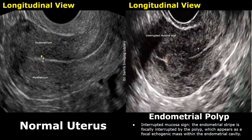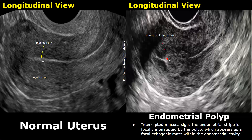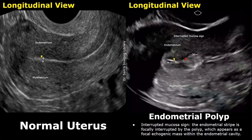The interrupted mucosa sign is another feature of an endometrial polyp. There will be a focal disruption or interruption in the endometrial stripe — the normal endometrial stripe is a thin hyperechoic line. You can see a discontinuity in the stripe, a focal interruption due to the presence of the endometrial polyp, which has disrupted the normal shape of the endometrial stripe.